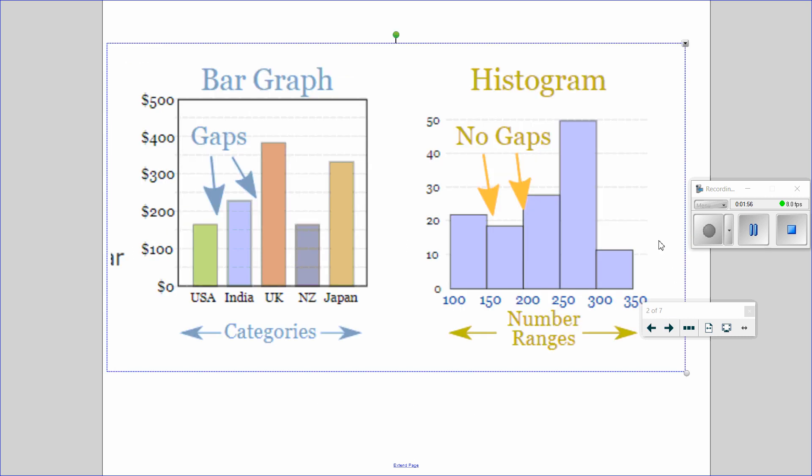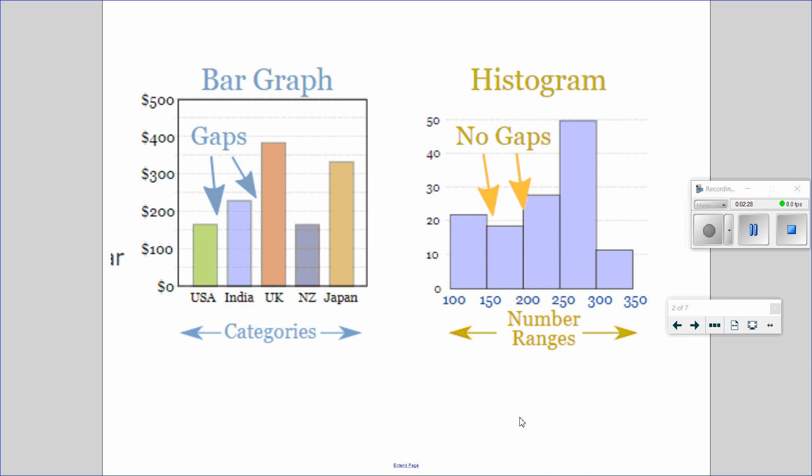So here are the differences and similarity. In a bar graph, there are gaps. In a histogram, there are no gaps. In a bar graph, these are about categories. Each bar tells you exactly what it is about. While in here, it has number ranges. Another word is intervals. It ranges from 100 to 150, 150 to 200, 200 to 250, 250 to 300, 300 to 350. So let's see if we can answer some questions.